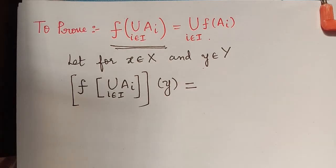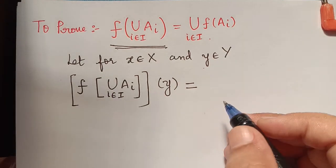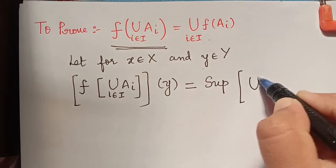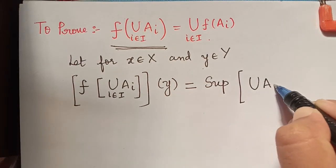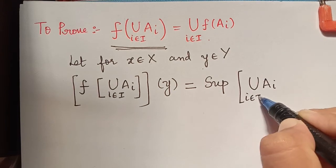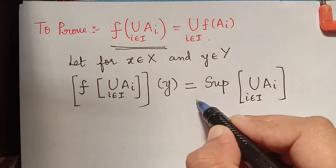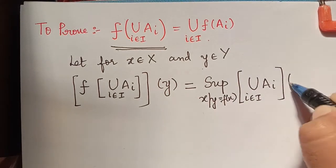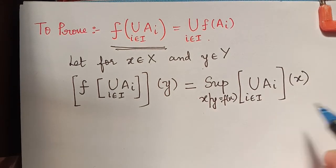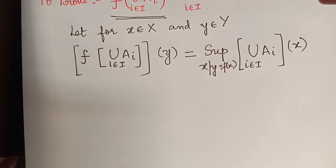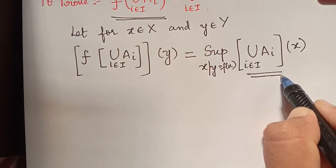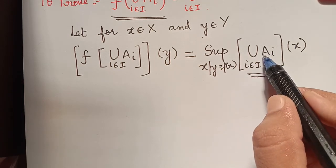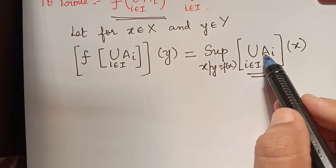Using this definition, we obtain that f of union Ai, for i an element of capital I, of y is equal to supremum of union Ai, for i an element of capital I, of x, over x such that y equals f of x. This is by the extension principle. This union of Ai can be written as supremum of Ai of x, by using the fuzzy union.